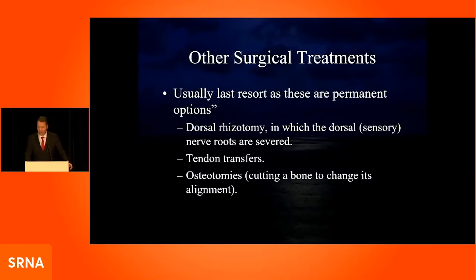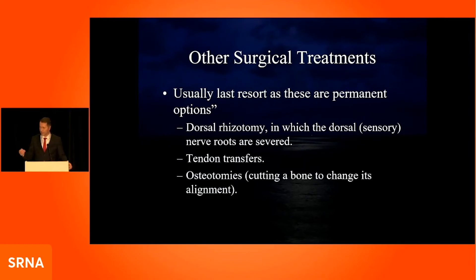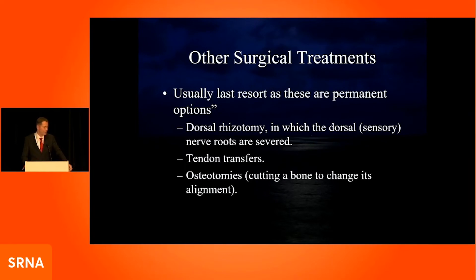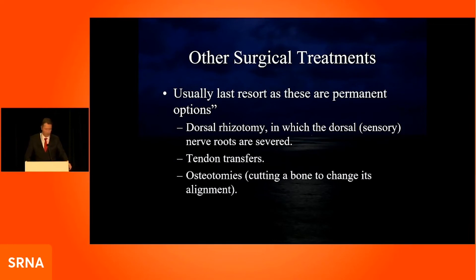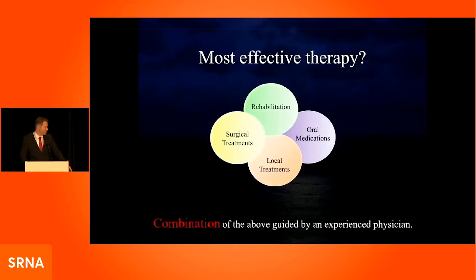As a last resort, if oral medications, Botox, and intrathecal baclofen all fail, surgical treatments are available — though we see this less and less. Surgery is generally irreversible: you can cut the nerves going into the affected limb, or cut the tendons themselves to release the contracture. This is truly the last resort, which is why we try to identify early signs of spasticity and contractures and address them aggressively with stretching or medications to avoid ever reaching this point.